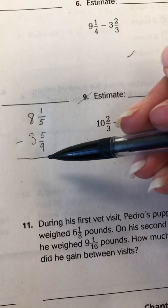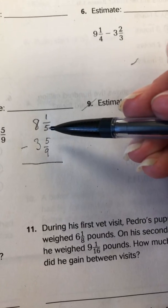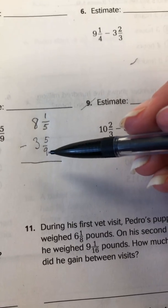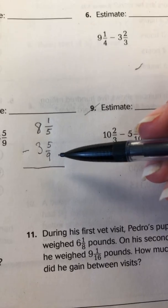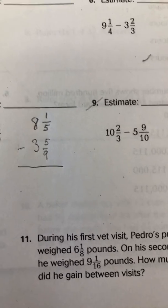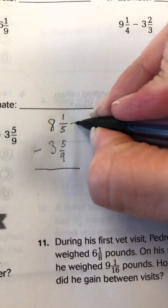So we're going to want to make sure you are lining up your whole numbers together and your fractions together. Step 1, as always, is find a common denominator. So a common denominator for 5 and 9 is going to be 45. So we're going to make two new fractions with a common denominator of 45.